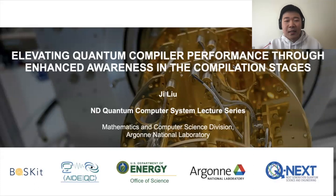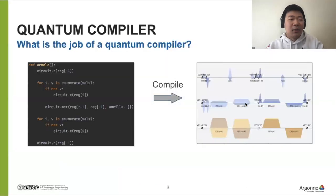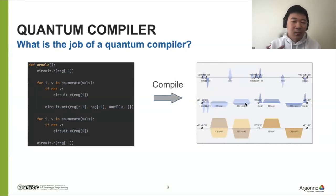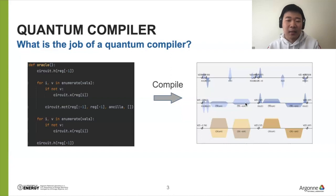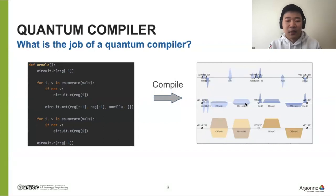Let's start with background: what is the job of a quantum compiler? Given a quantum program — a high-level description — a quantum compiler will compile this program to the basic native operations, like the control signals of the target device. This also involves circuit optimizations and many different steps in this compilation.